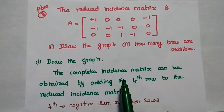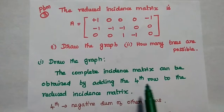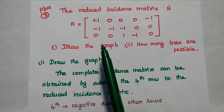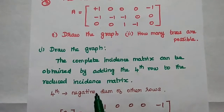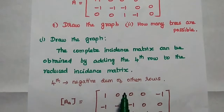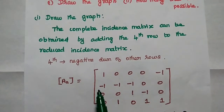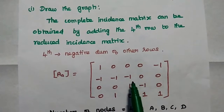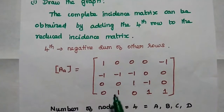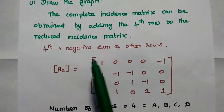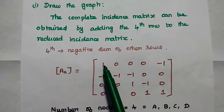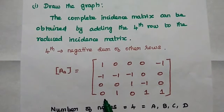The complete incidence matrix can be obtained by adding the 4th row to the reduced incidence matrix. We are going to take the negative sum of the other rows. The first 3 rows are the same as that of the given data, and we are going to form the 4th row by taking the negative sum of the other rows.